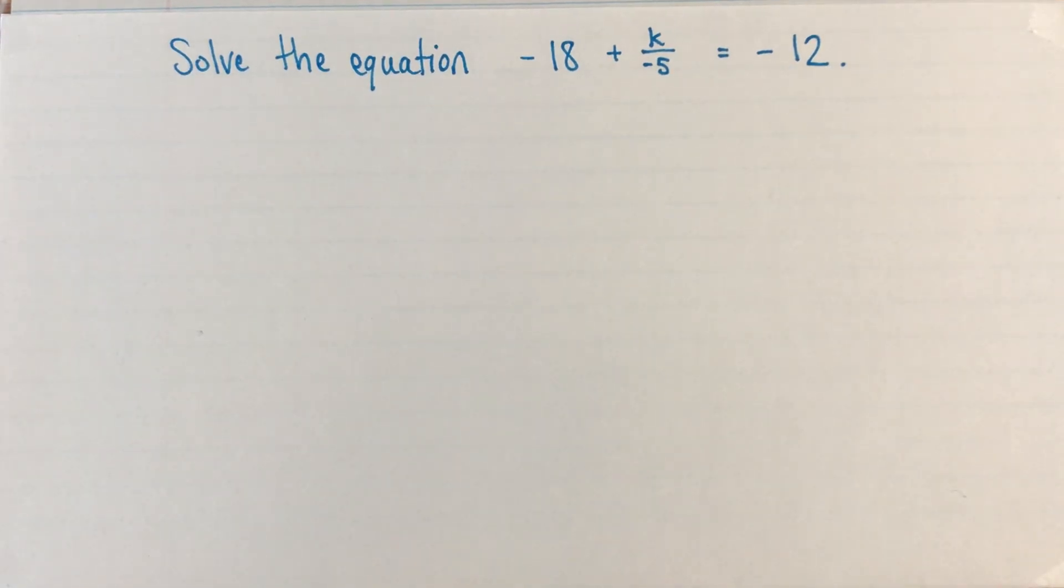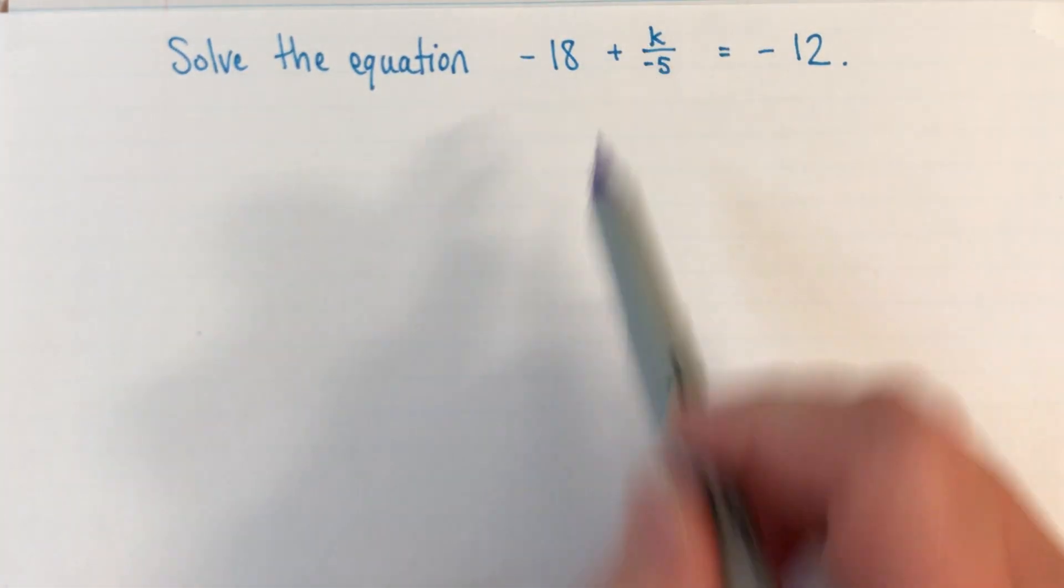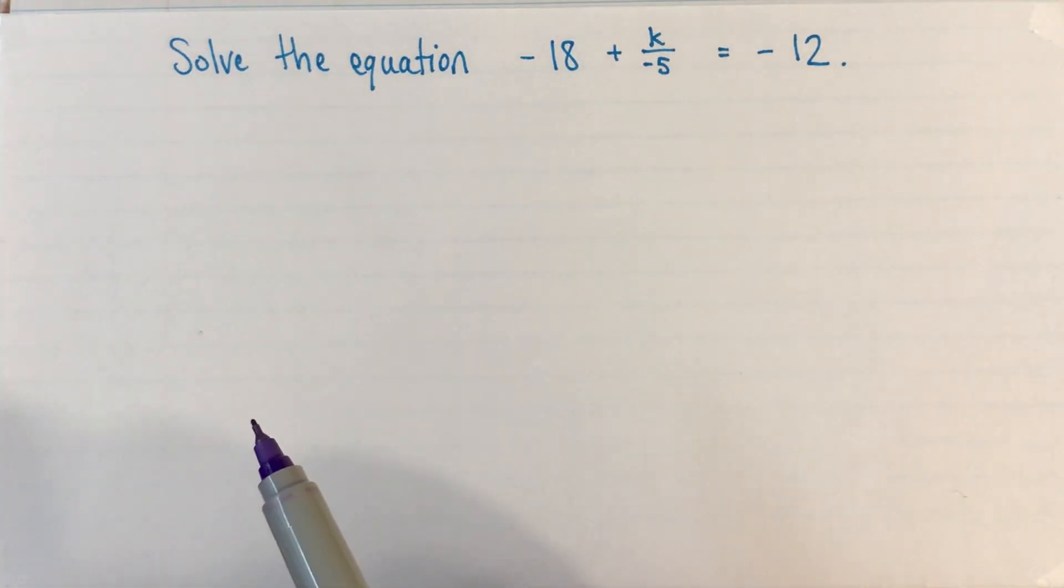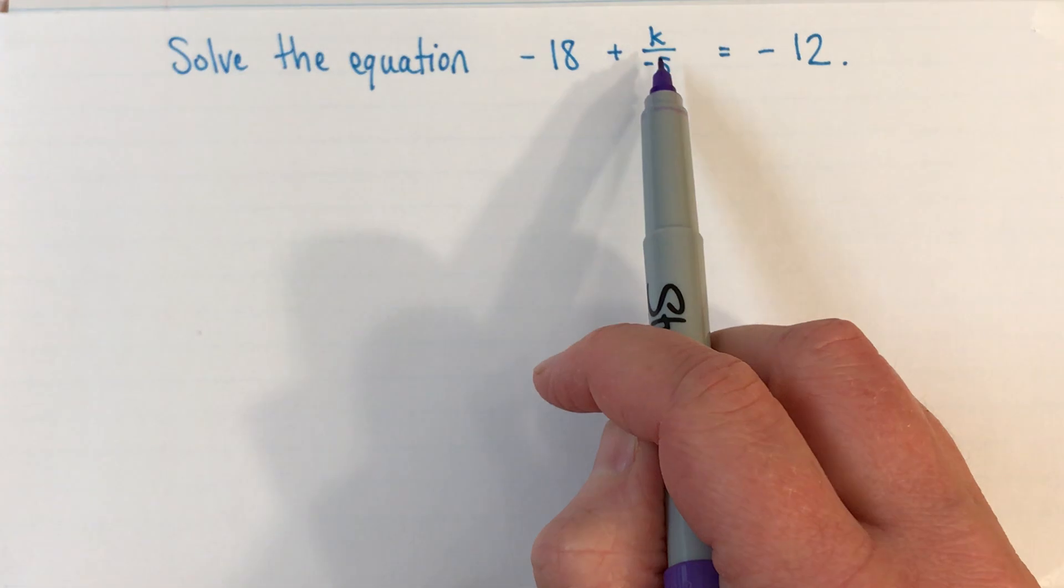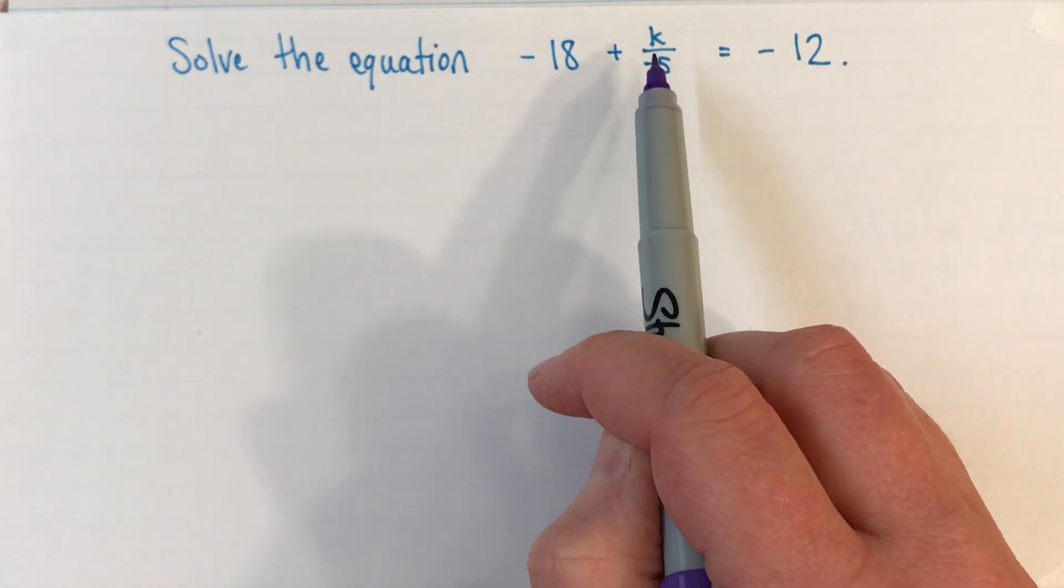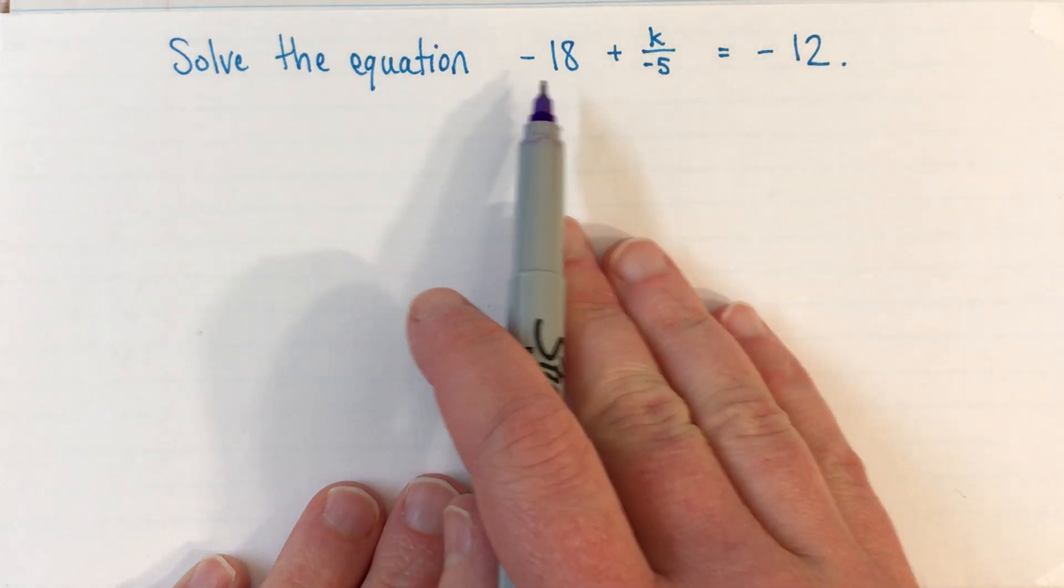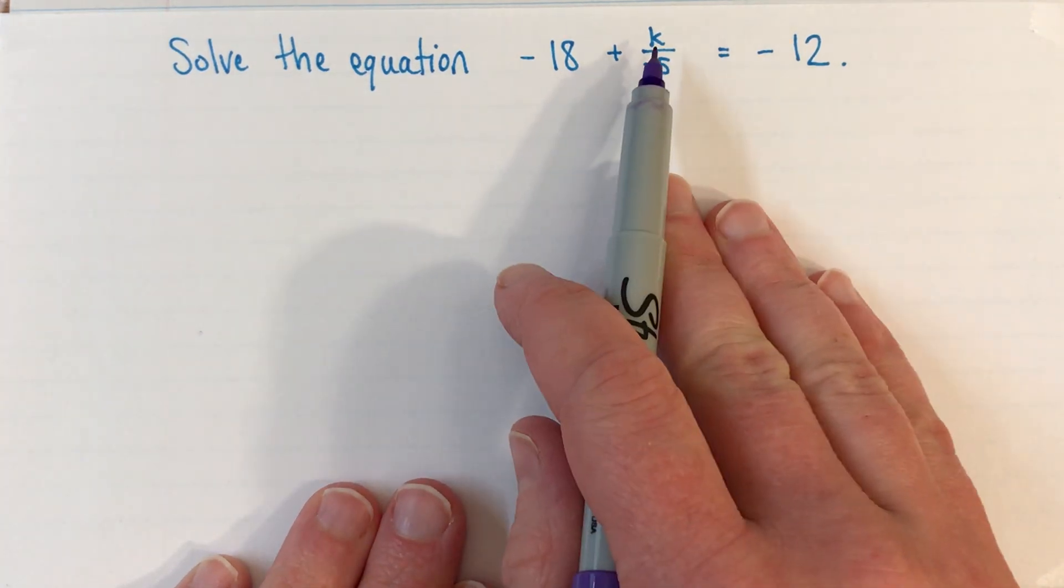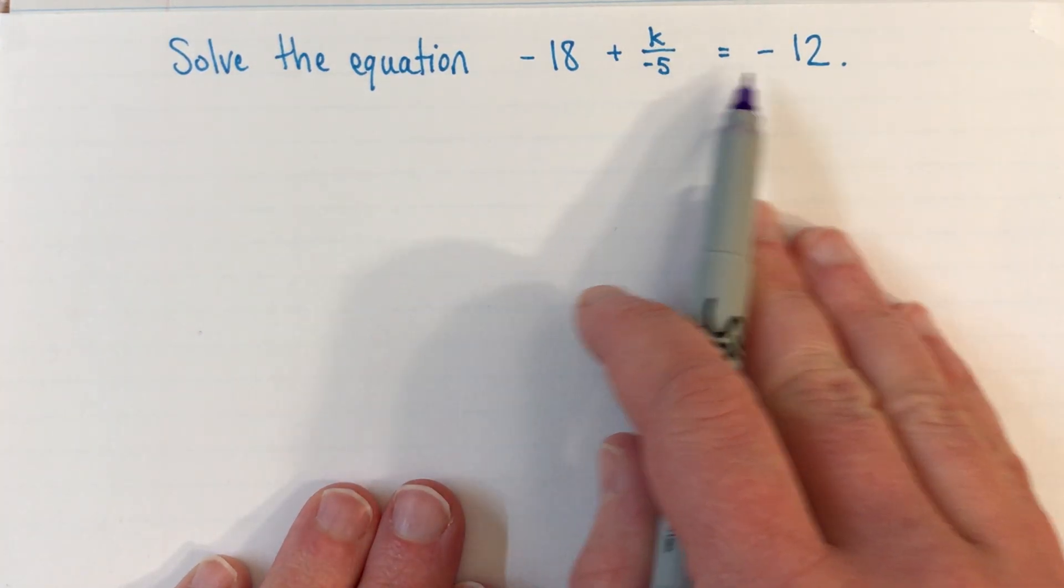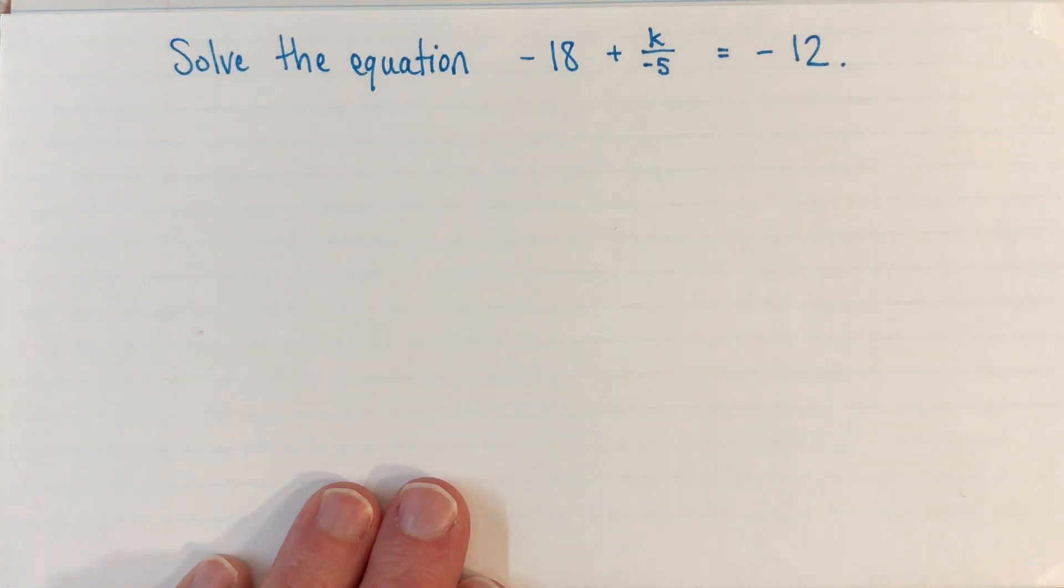Hi. In this video, we're going to solve two different equations that have fractions in them and negative fractions at that. So in each of the equations, we have a variable that's an unknown divided by a negative number. The first one, we're asked to solve the equation -18 + k/(-5) = -12. So tons of negatives here.